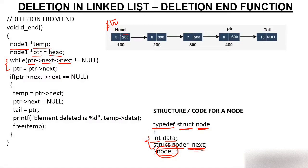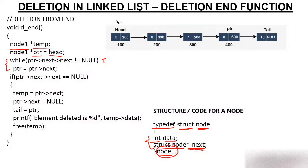PTR->next is 200, so we come to node at 200. PTR->next->next is 300, which is not null — condition becomes true. So we update PTR: PTR = PTR->next, so PTR comes to 200. We do not come out of the loop; we only exit when the condition becomes false.